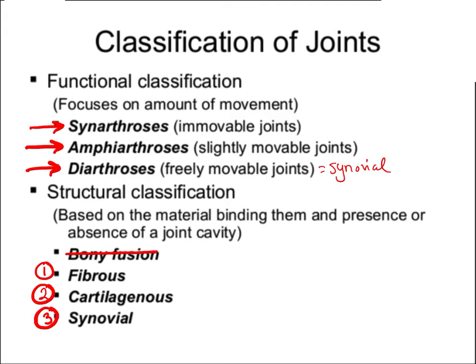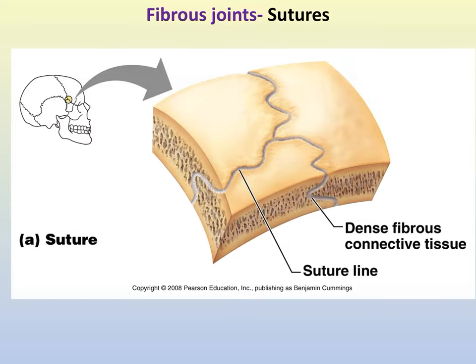We're going to begin with fibrous joints. Fibrous joints are joined by dense fibrous connective tissue. Examples of fibrous joints are sutures, syndesmoses, and gomphoses. Let's move through each one.